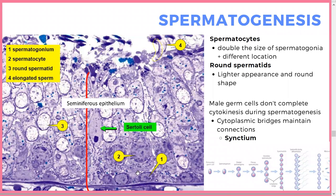They may ask you to recognize specific cells. The spermatogonium is at the bottom. The spermatocyte is about double the size of the first. The round spermatid looks similar but is more whitish. The elongated sperm is found far up toward the lumen. Usually cytokinesis separates cells, but in spermiogenesis that doesn't happen — a syncytium forms and cells stay connected for a while.